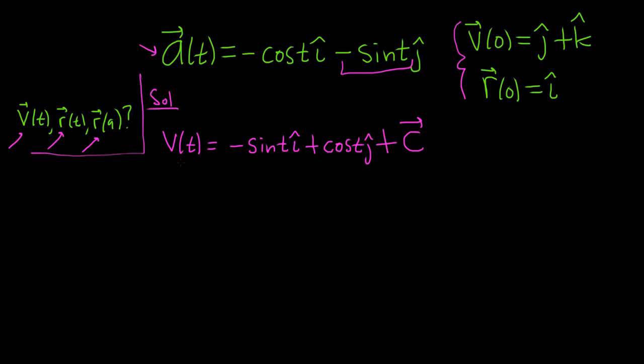So we've found the velocity vector. Now what we have to do is use our first condition. This is called an initial condition. So we're going to plug in 0 for all of the t's and set it equal to j hat plus k hat. So the velocity at 0 equals negative sine of 0, i hat, plus cosine of 0, j hat, plus c. And that's equal to j hat plus k hat.